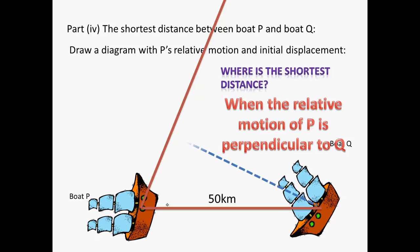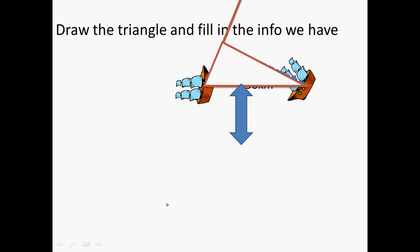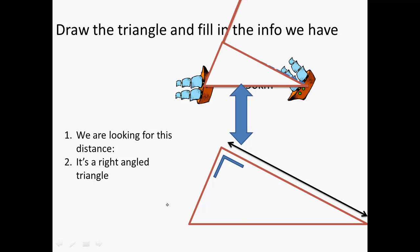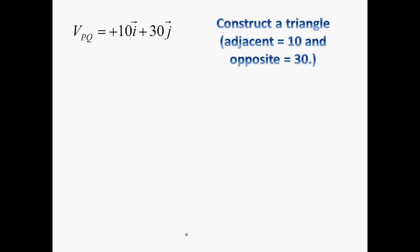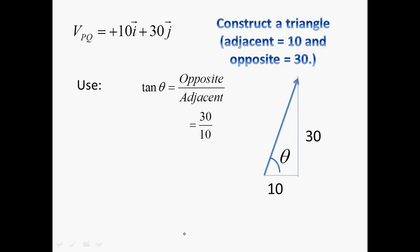So, that line there. So, we've got this kind of triangle. We're looking for that distance. We know it's a right angle there. We know it's 50 kilometres. So, we need to find out the angle here. We know that that vector, or that line there, is along the angle of the relative velocity vector, which is 10i plus 30j. So, if we construct a triangle with 10 as the adjacent and 30 being the opposite, we get tan of that equal to 3. And then the angle will be the tan inverse of that, which is 71.56 degrees.